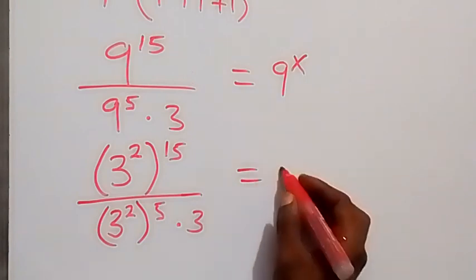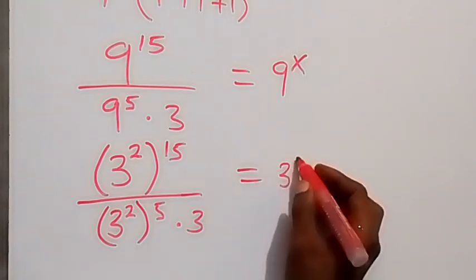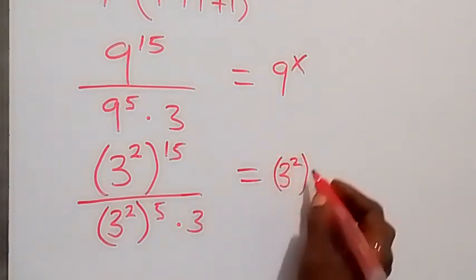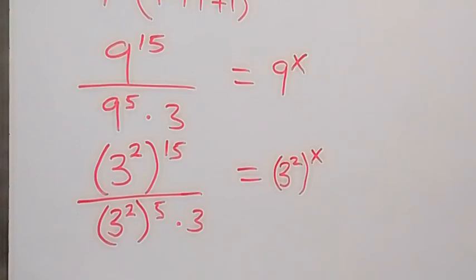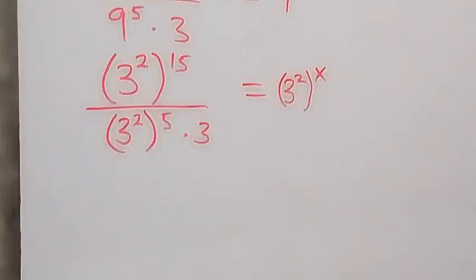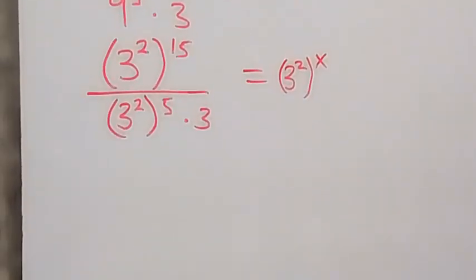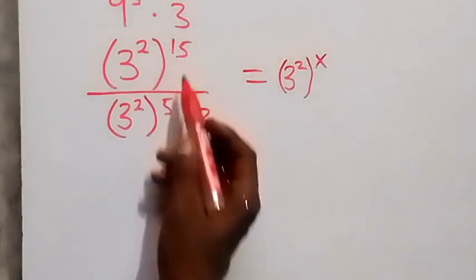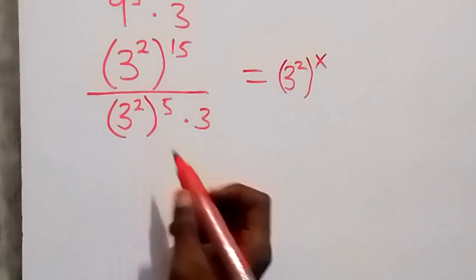And from here we also have 3 squared raised to power x. Then when we apply the law of indices, the powers multiply each other.